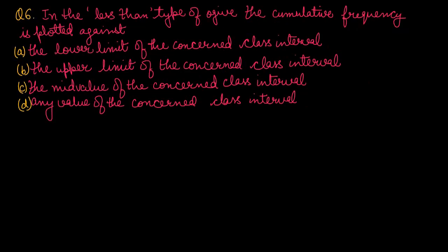Question number 6: In the less-than type ogive, the cumulative frequency is plotted against — A) the lower limit, B) the upper limit, C) the mid value, or D) any value of the concerned class interval? The less-than type ogive uses upper limits, that means the upper limit of the concerned class interval. Option number B is the right one.